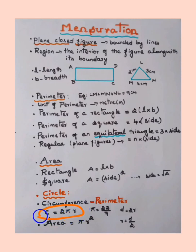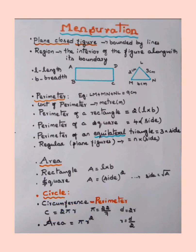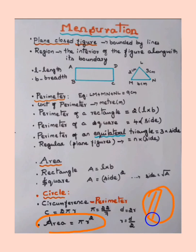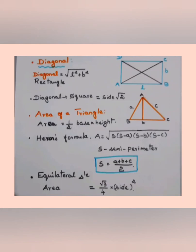Remember: for circumference it's 2πr — no square, since it's a plane figure. For the area of a circle, the formula is A = πr². If the diameter is given instead of the radius, divide the diameter by 2 to get the radius, then substitute into the formula.